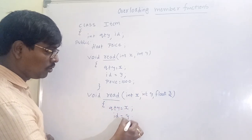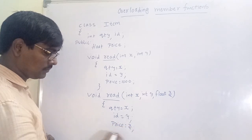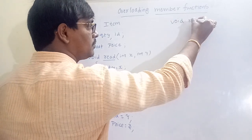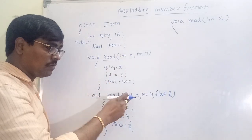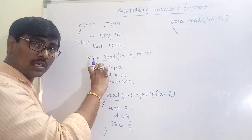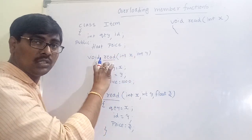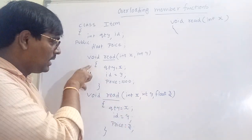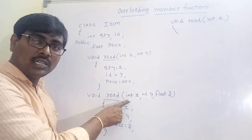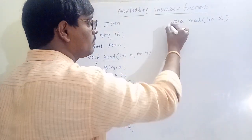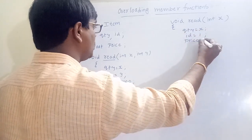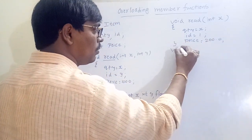The second `read` function takes three parameters: `int x`, `int y`, `float z` — quantity equals x, id equals y, price equals z. A third `read` function takes a single `int x`. Note that this x is different from the previous x — x is local to its block, once we come out of the block, there is no x.